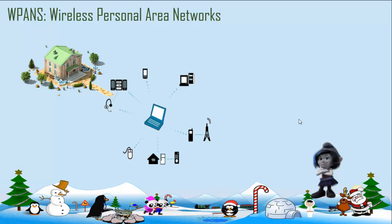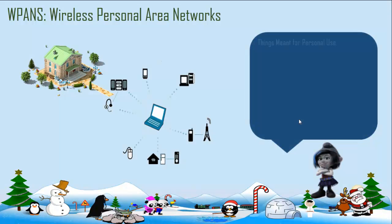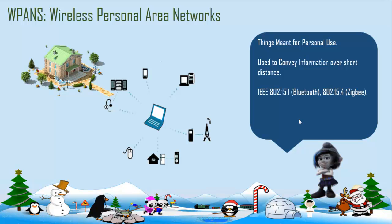The wireless personal area network doesn't extend much beyond a room. Information is conveyed over a small distance, and we have the likes of Bluetooth. We also have Zigbee, or IEEE 802.15.4. In the future you will hear this standard time and again because of IoT, which is going to be the third wave in the technological world. Important features of Zigbee are that it is power efficient, inexpensive, and has little or no infrastructure.